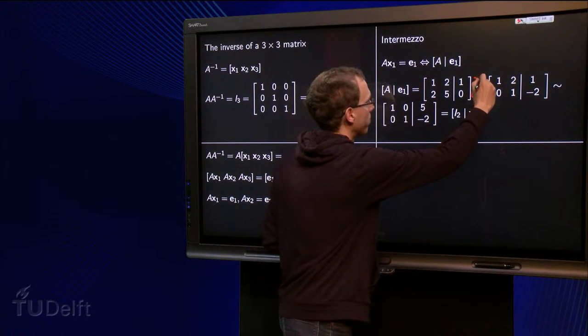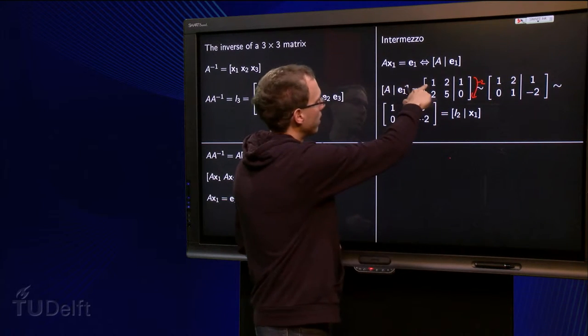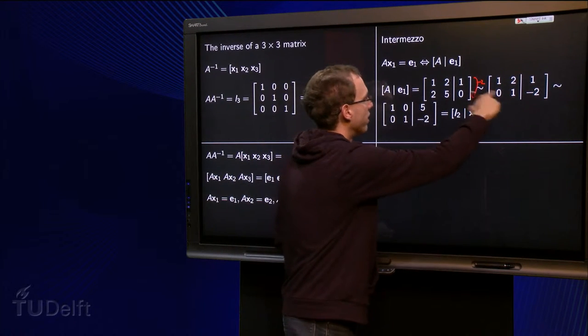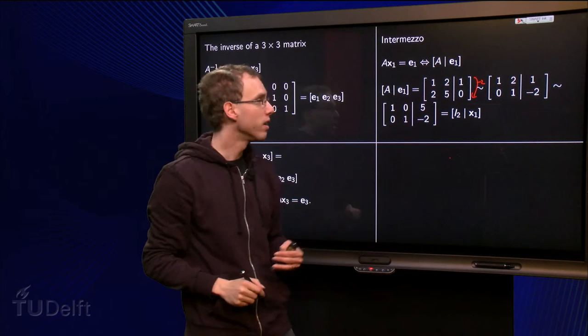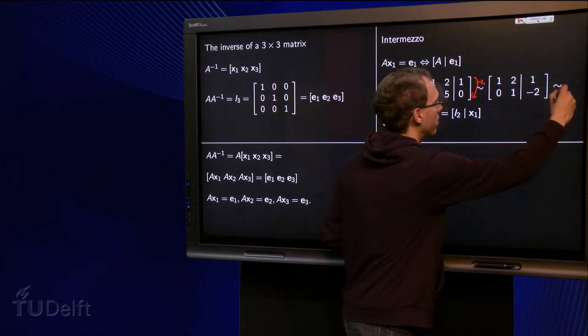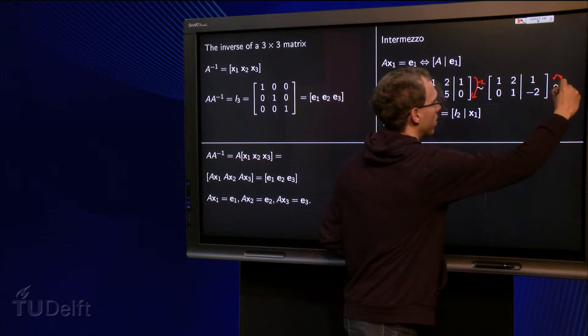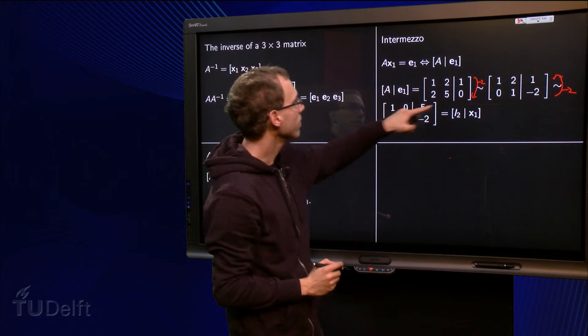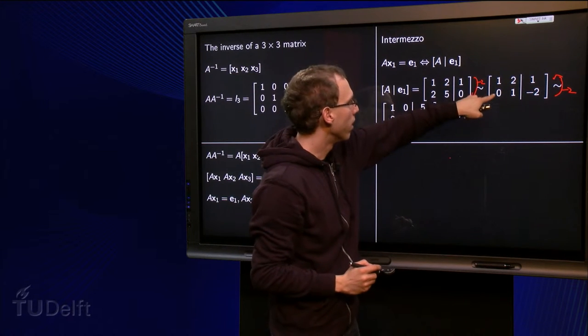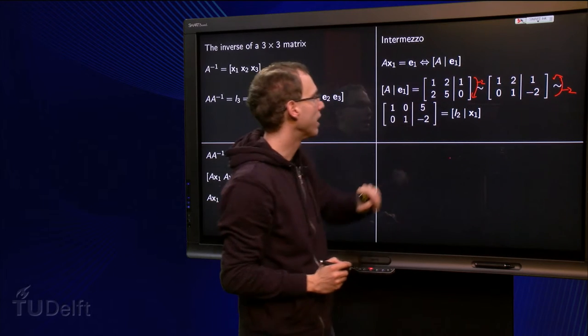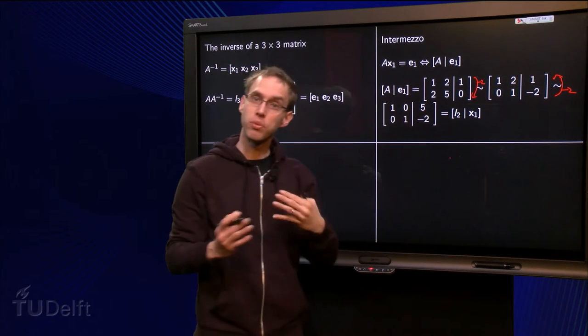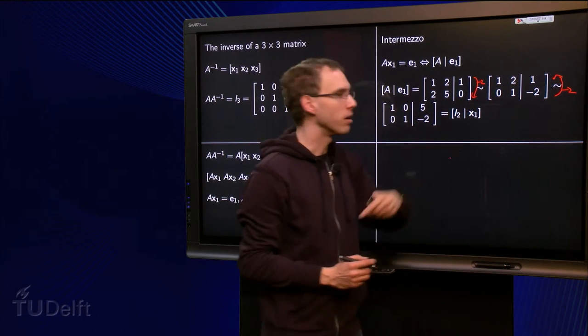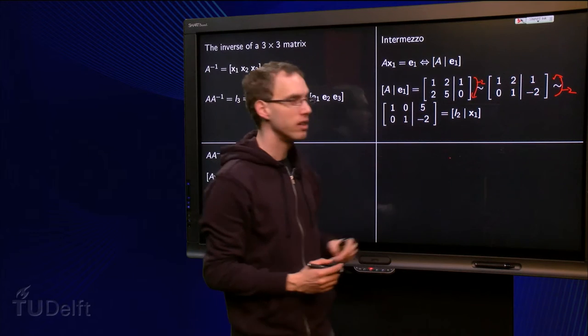So we get minus 2 plus 2 equals 0, minus 4 plus 5 equals 1, minus 2 plus 0 equals minus 2. And the second row stays the same, minus 2 times 0 equals 0, added to 1 equals 1, minus 2 times 1 equals minus 2, added to 2 equals 0, minus 2 times minus 2 equals 4, added to 1 equals 5.